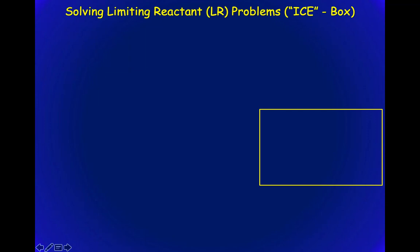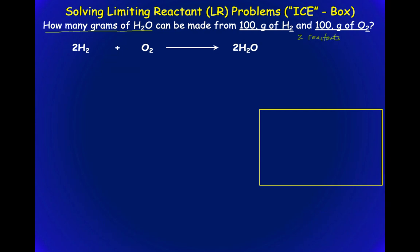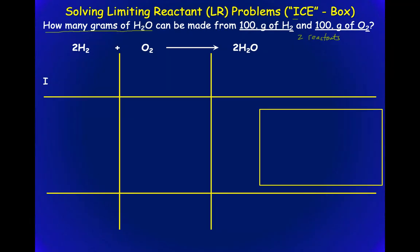So how do you actually solve these problems? I use something called an ICE box. We make a little chart — ICE stands for Initial, Change, and End — and each column represents a particular compound or element in the reaction. Let's work through the question: how many grams of water can be made from 100 grams of hydrogen and 100 grams of oxygen?